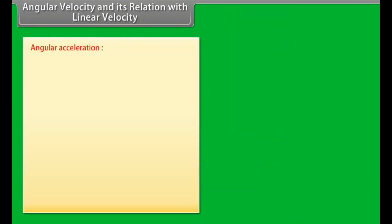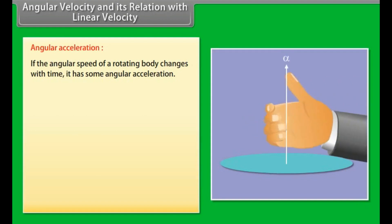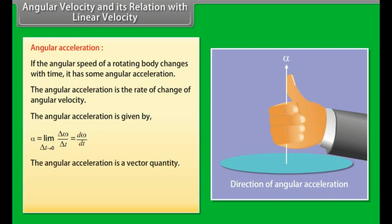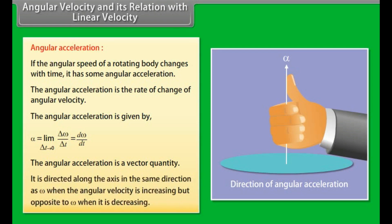If the angular speed of a rotating body changes with time, it has angular acceleration. Angular acceleration is the rate of change of angular velocity: α = lim(Δt→0) Δω/Δt = dω/dt. Angular acceleration is a vector quantity directed along the axis in the same direction as ω when angular velocity is increasing, and opposite to ω when it is decreasing.